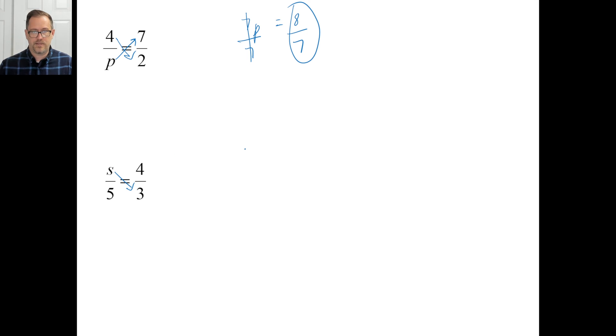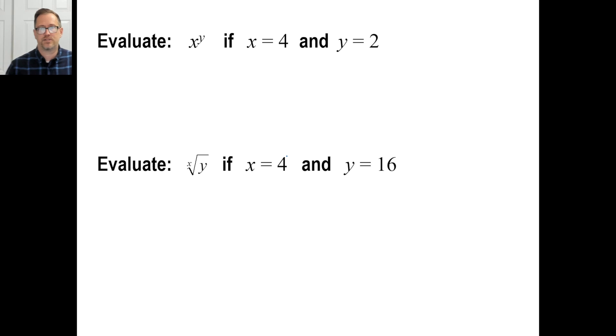Same thing here. s times 3 is 3s. Make sure you write your s like an s, not a 5. 5 times 4 is 20. And then, the last thing you need to do is divide by 3. So, s is equal to 20 over 3. There we go. Pause it and try c and d.